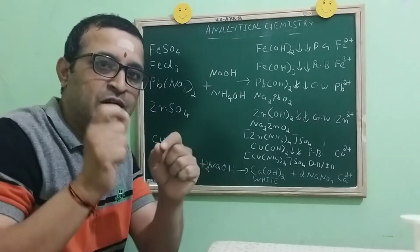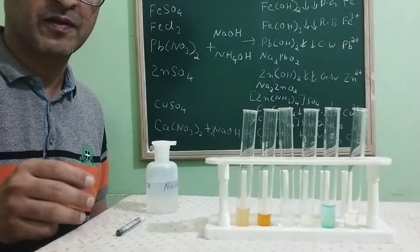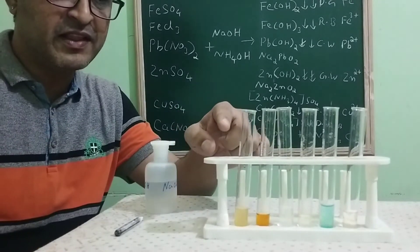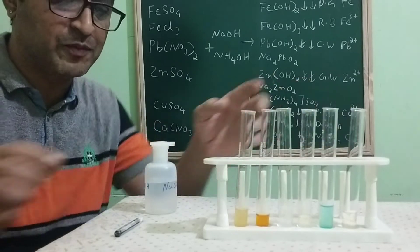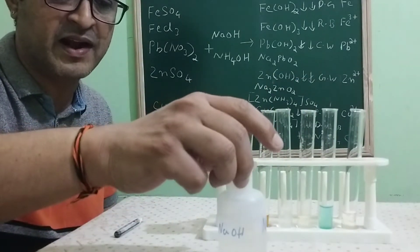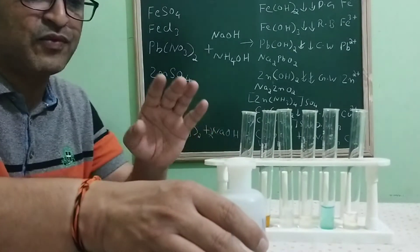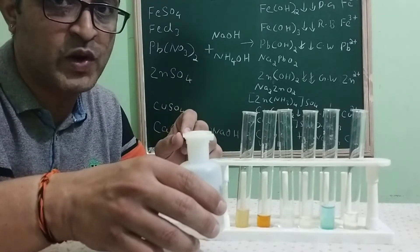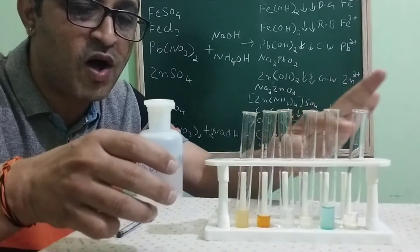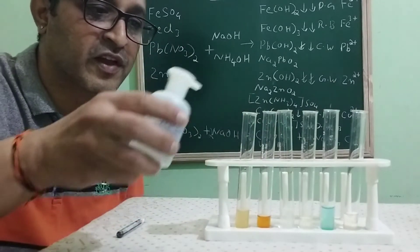Now children, we will do the practicals of all these things. We have taken the salt solutions in different test tubes. To all the salt solutions, I am going to add sodium hydroxide. Just observe very carefully what is the color of the precipitate you are going to get when I add sodium hydroxide to all these test tubes containing salt solutions.